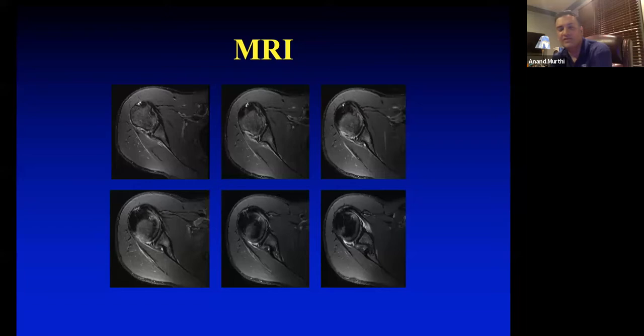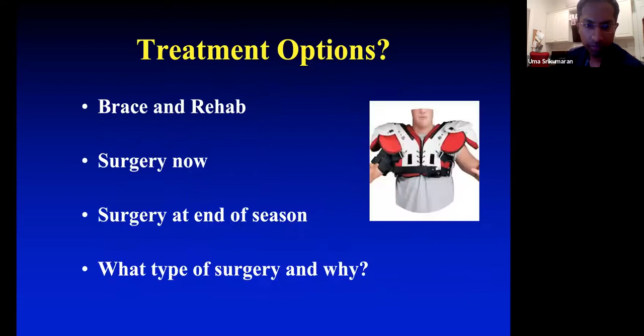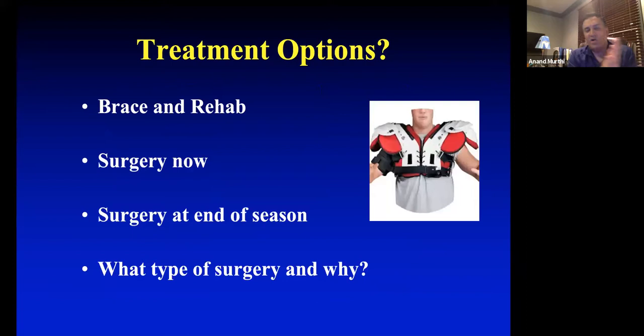Uma's diagnosis based on the films and exam: he has some anterior apprehension on exam. Looking at the imaging and x-rays, it appears to be more posterior-related pathology — both a posterior labrum issue and the capsule coming off the humeral side. So maybe a reverse haggle kind of presentation.